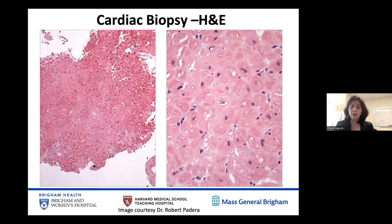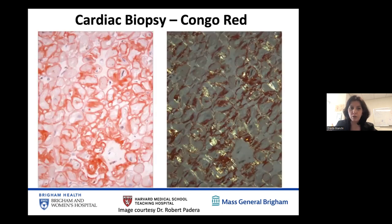Here are some images of biopsies of organs involved by amyloid. This is an endomyocardial biopsy at low power — you see the dark pink material of the cardiac myocytes, and then lighter shades of pink representing proteinaceous material. At higher power, this proteinaceous material wraps around individual cardiac cells. Stained with Congo red, we see positivity on direct light, and pathognomonically this red dye turns into so-called apple green birefringence when viewed under polarized light.